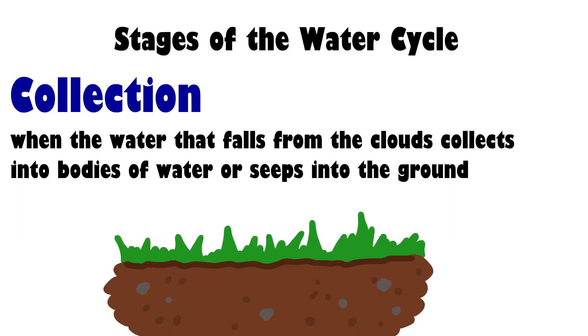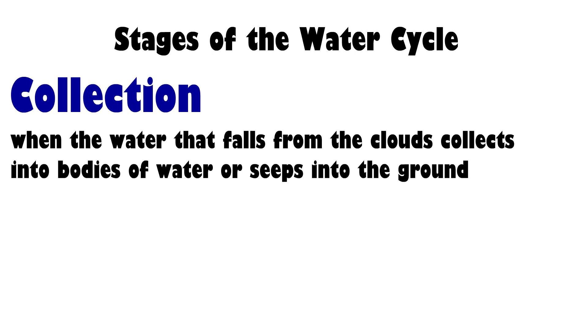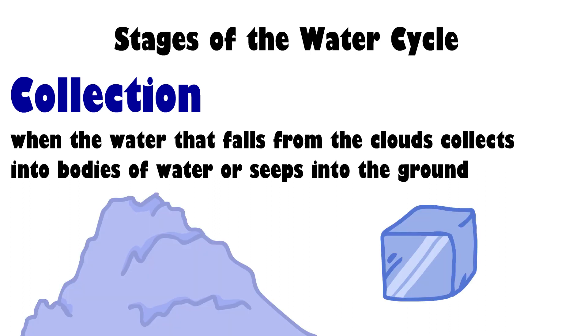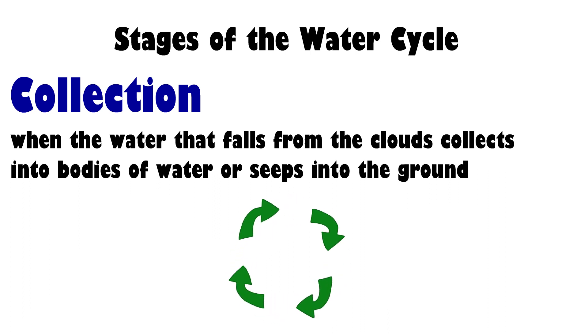Some of the water falls and collects into the ground, which helps plants to grow. When it is really cold, the water will collect and form glaciers or ice. This collection of water will eventually evaporate and start the water cycle all over again.